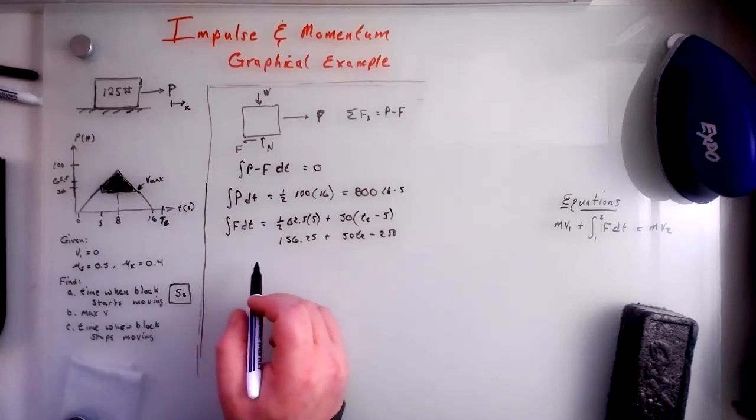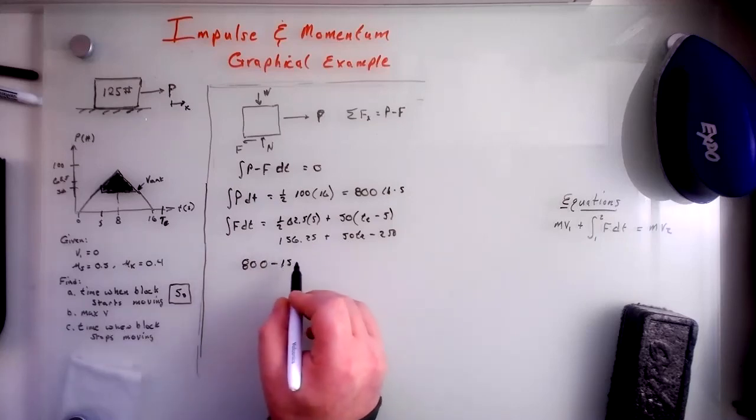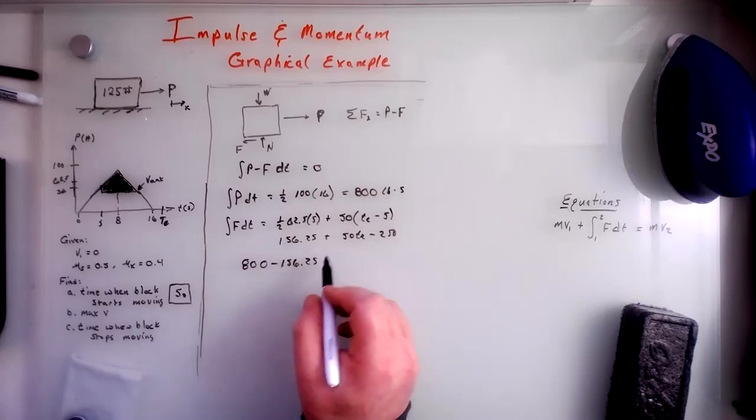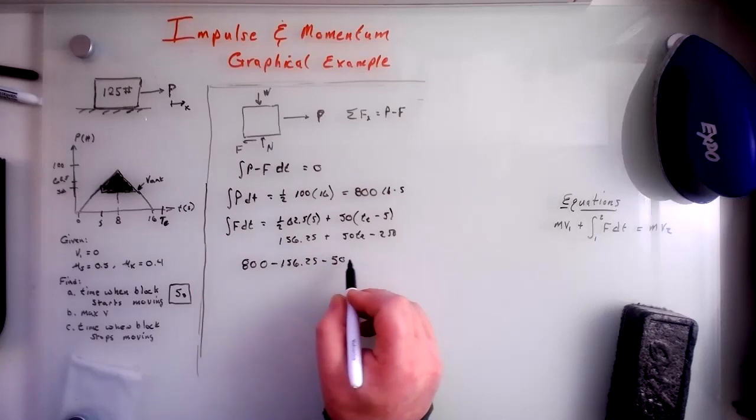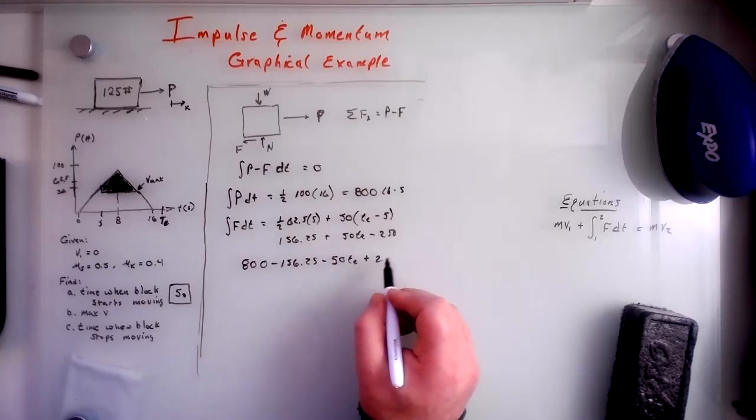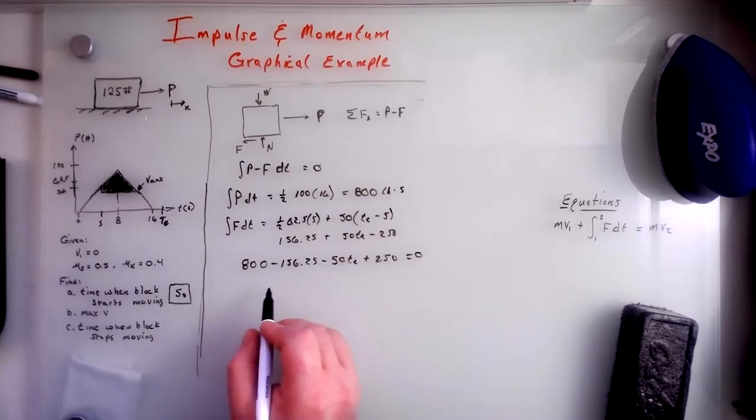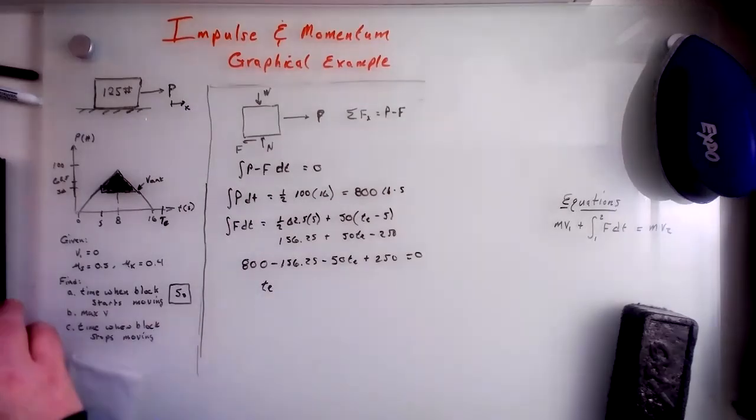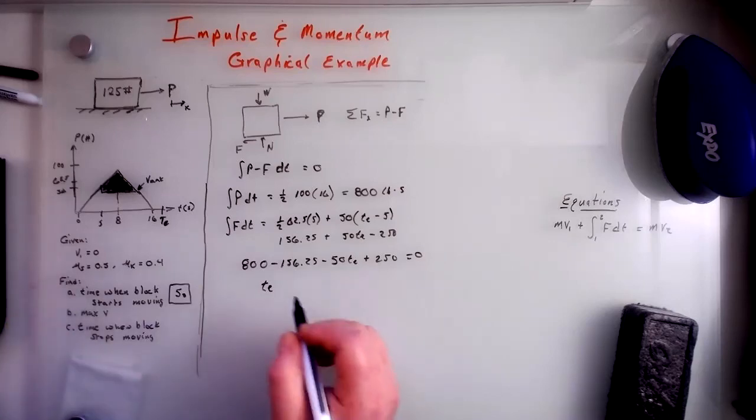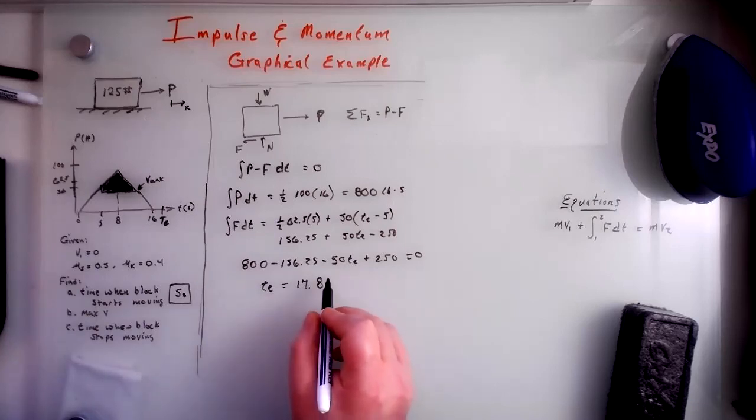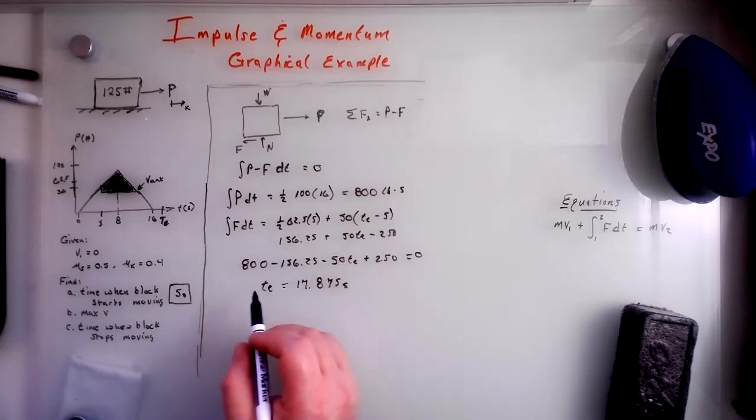So we'll add this to the other side, divide by 50. So what is that? 800 minus 156.25 plus 250, all that divided by 50. And that gives us 17.875 seconds. There we go.